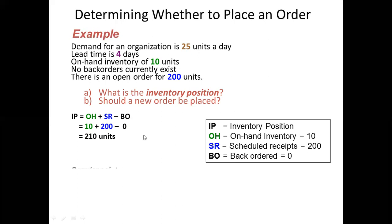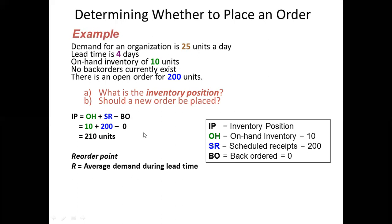The inventory position is 210 units. At the reorder point, we have to reorder. The company knows that it has a number of materials available for 4 days.